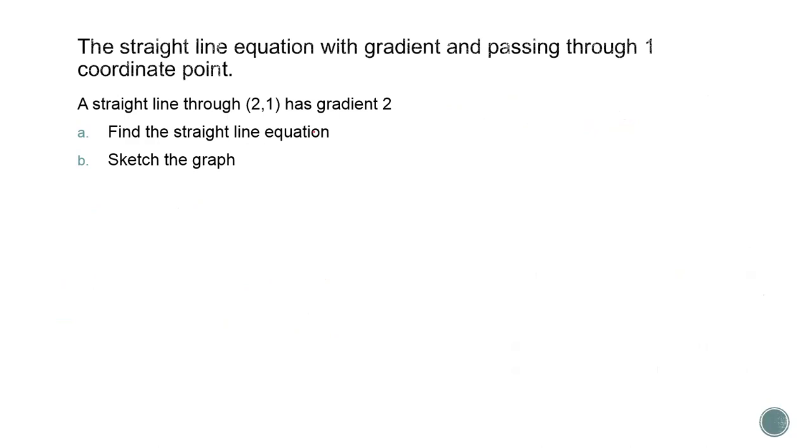A straight line through 2, 1 has gradient 2. Find the straight line equation and sketch the graph. Okay, in this question, a equals 2, b equals 1, and m or slope or gradient equals 2.